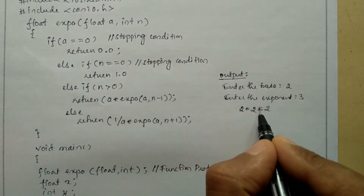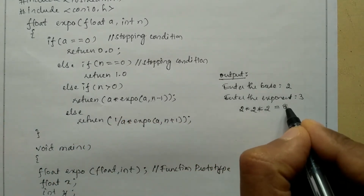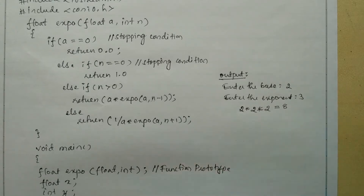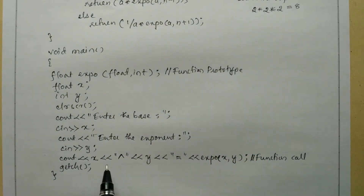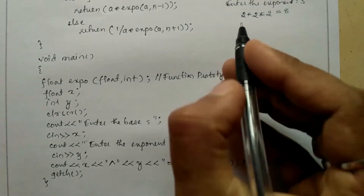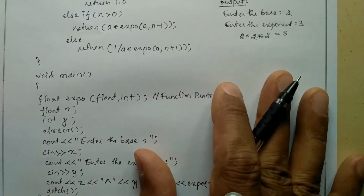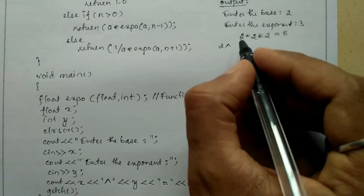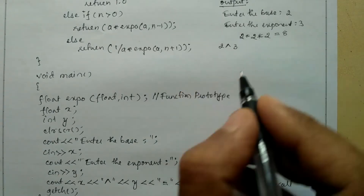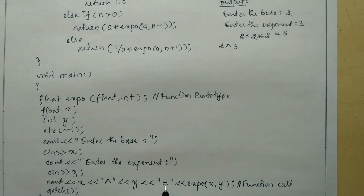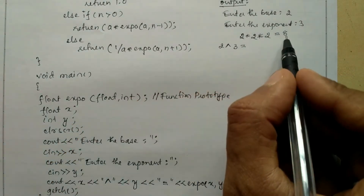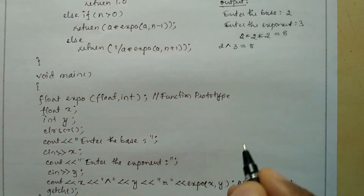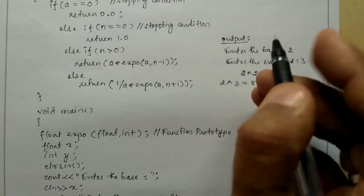So x to the power y — x is 2, the caret symbol is printed, y is 3, equal to is printed, and expo(x, y) returns 8. So the output prints: 2^3 = 8.